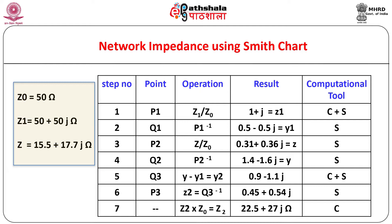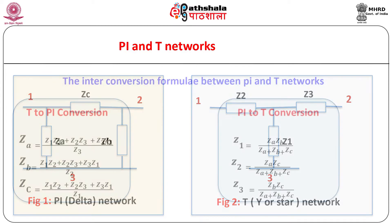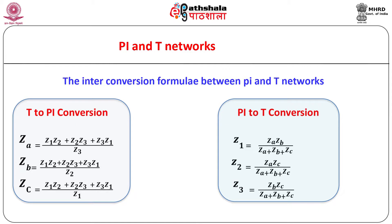While dealing with circuits involving series and parallel combinations of impedances or bridge networks, special methods like loop current, mesh current, and node voltage methods based on Kirchhoff's laws are generally used. For analysis of these and three-phase circuits, special methods known as pi and T networks are used. T and pi networks are also known as star and delta networks. Use of reactive elements instead of resistive elements is preferred because it avoids loss of power. The inter-conversion formulae between pi and T networks are as shown.